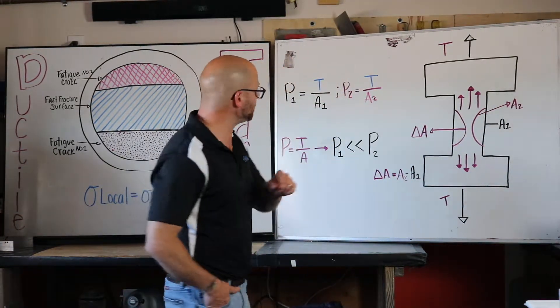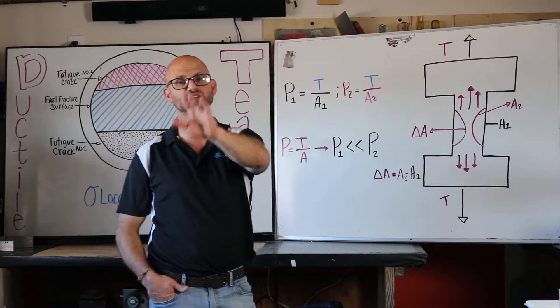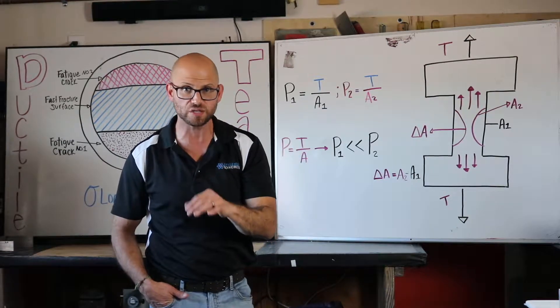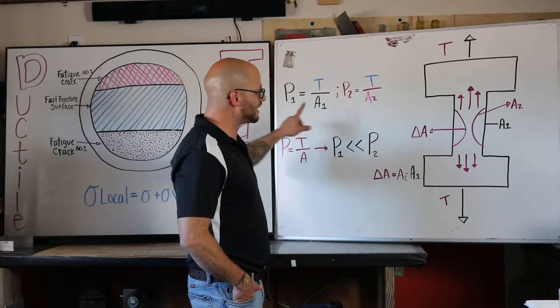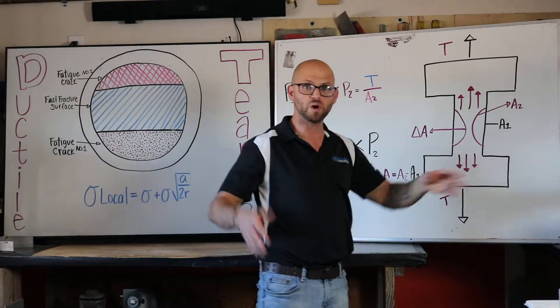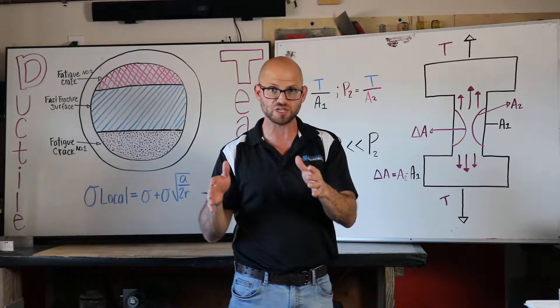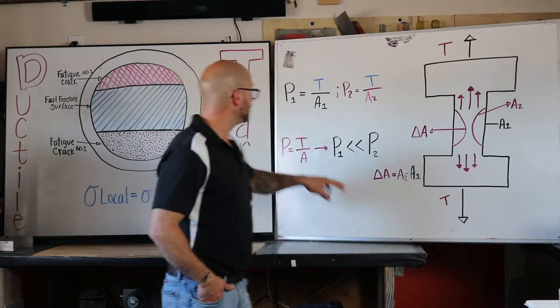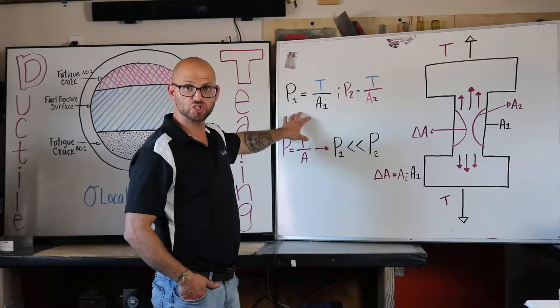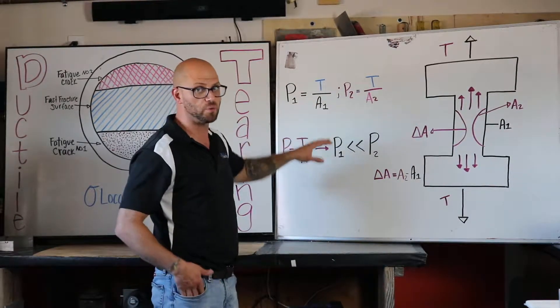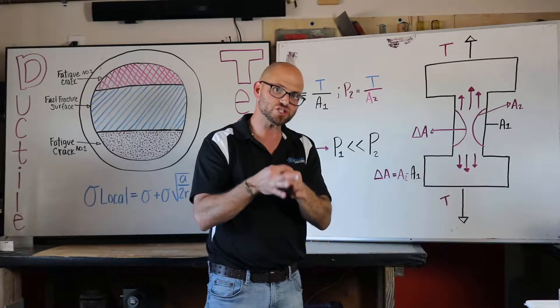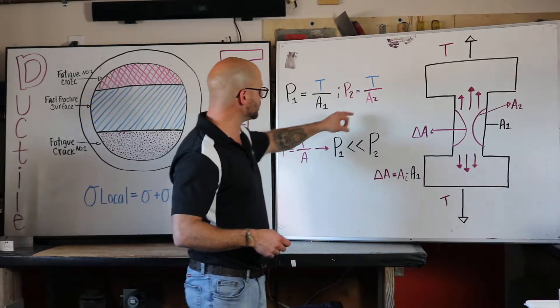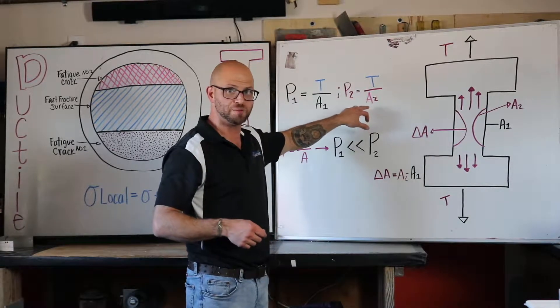Now what happens in that process—we cannot forget that our pressure equation equals load over cross-sectional area. So the load at time one for area one, where we have our original larger cross-sectional area with a constant tensile force, means that we have a certain load, this T over area one. As that cross-sectional area becomes smaller because of necking, because that cross-sectional area is in the bottom, in the denominator,